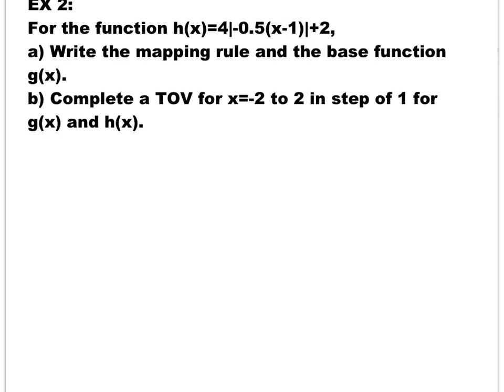In the next example, we have the function h of x equal to 4 times the absolute value of negative 0.5 times open bracket x minus 1 close bracket, plus 2. We are supposed to write the base function g of x and the mapping rule. Since we are dealing with the absolute value function, the base function g of x is just the absolute value of x.